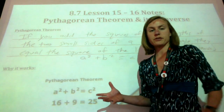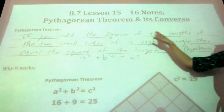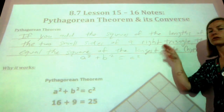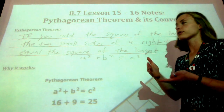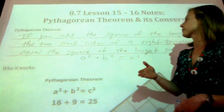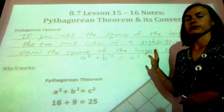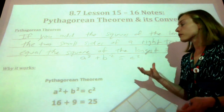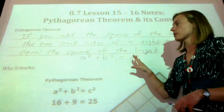Here's our definition of the Pythagorean Theorem. If you add the squares of the lengths of the two small sides of a right triangle — so if you have a right triangle and your two smaller sides, you square those sides, add them together — they equal the square of the longest side, which we also call the hypotenuse. The formula you use is a squared plus b squared equals c squared.